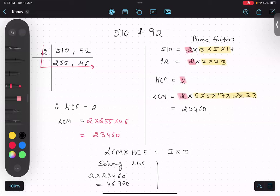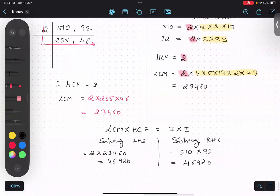So now solving right hand side. That means first number 510 multiply by 92, which will also give me 46,920. So we'll write hence verified.